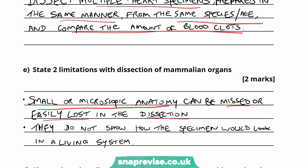Another limitation is that dissection doesn't show how the specimen would look in a living system. The animal is deceased, and the organs have been prepared and stilled so that the anatomy is generally preserved, but they're not working in the body anymore. So it doesn't give you much idea, for example, of how the heart would pump blood around the body or how the kidney would filter blood — it doesn't show how the organs would actually work in real life.